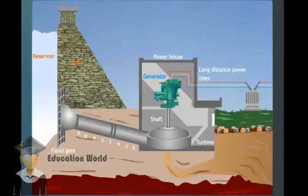A dam is built across a large river to hold back the river water and raise its level to form a reservoir. At the bottom of the dam, there is a floodgate.